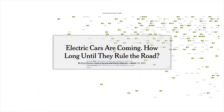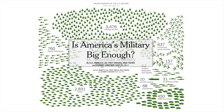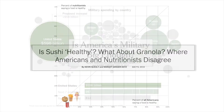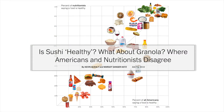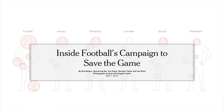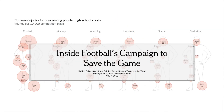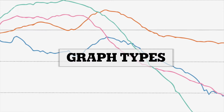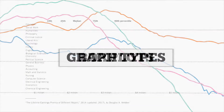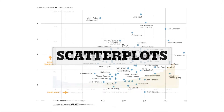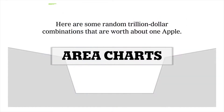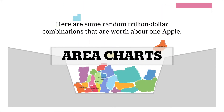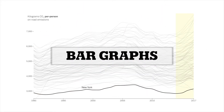Past graphs have looked at gas and electric vehicles, international military budgets by country, how nutritionists and the public vary on how nutritious they think certain foods are, and even high school sports injuries. We also vary graph types including box plots, histograms, scatter plots, bubble charts, area charts, bar graphs, and maps.